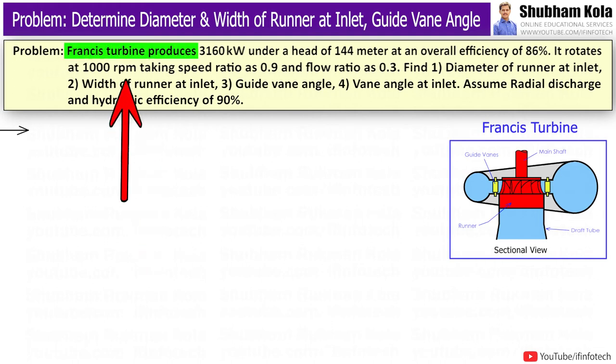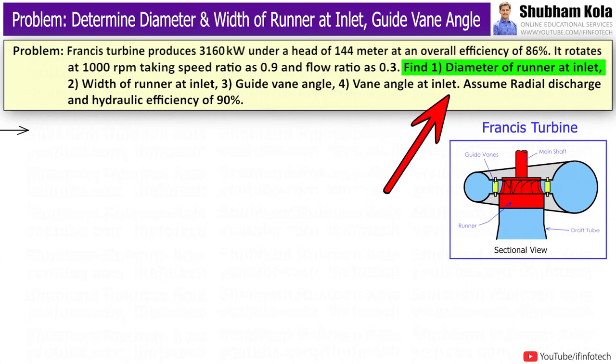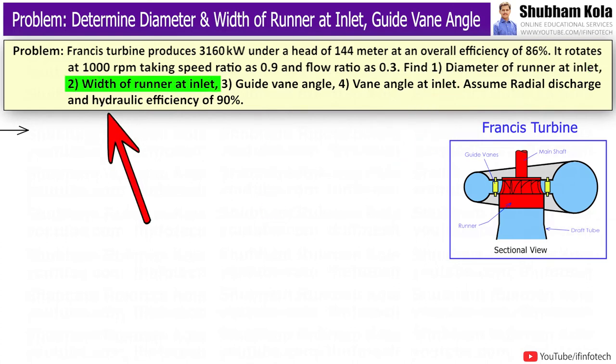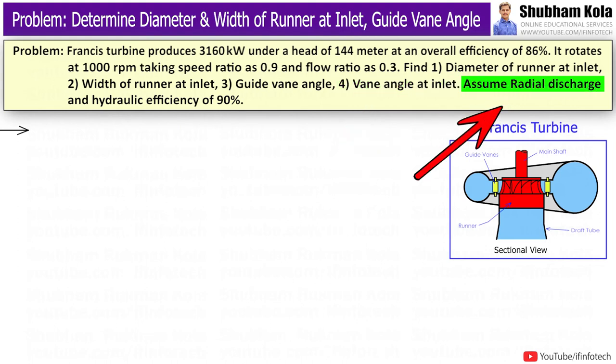Francis turbine produces 3160 kW under a head of 144 meters at an overall efficiency of 86%, it rotates at 1000 rpm, taking speed ratio as 0.9, and flow ratio as 0.3. Find diameter of runner, width of runner at inlet, guide vane angle and vane angle at inlet. Assume radial discharge and hydraulic efficiency of 90%.